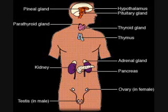Adrenocorticotropic Hormone, or ACTH. Gland: Anterior Pituitary. Function: to stimulate secretion of hormones by the adrenal cortex.